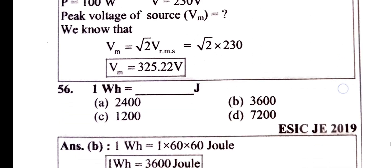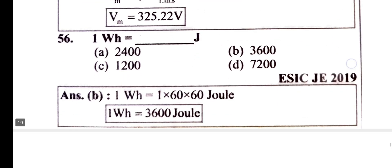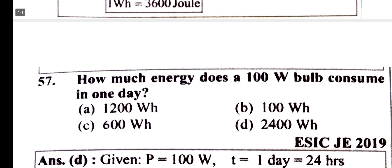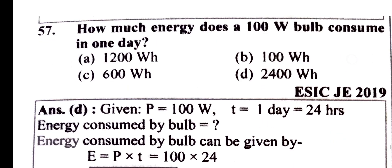1 kWh equals 3600 joules. How much energy does a 100 W bulb consume in 1 day? Power is 100 W, time is 1 day which equals 24 hours.